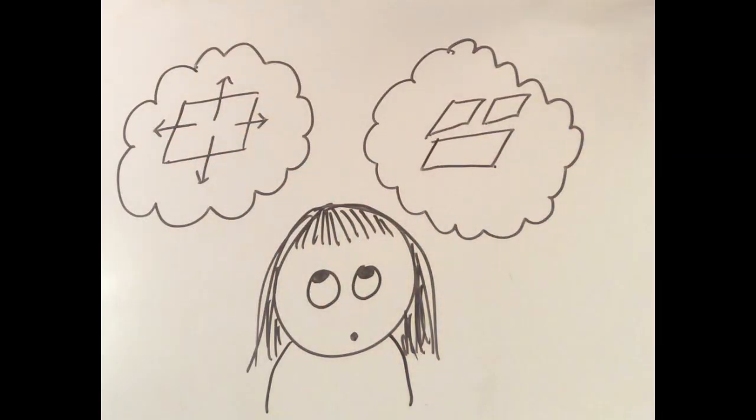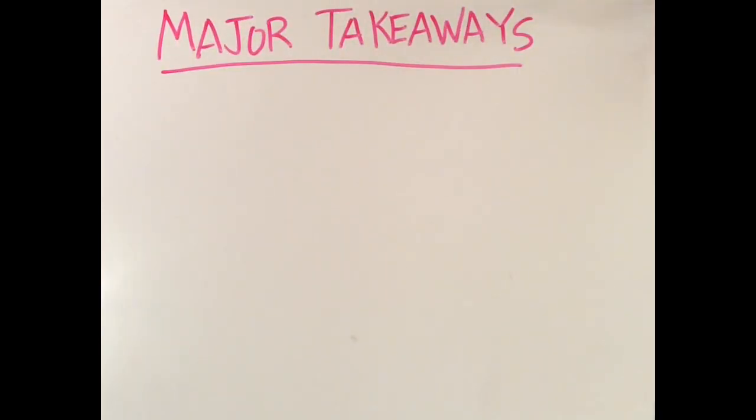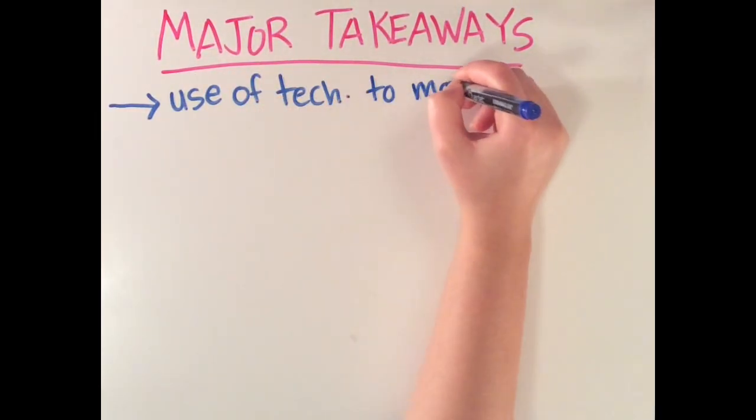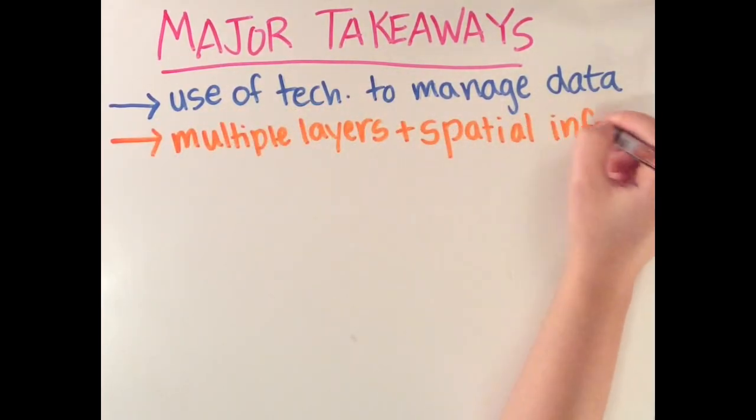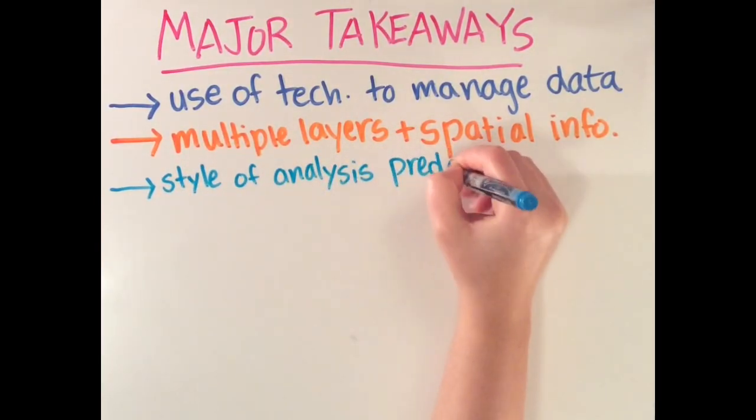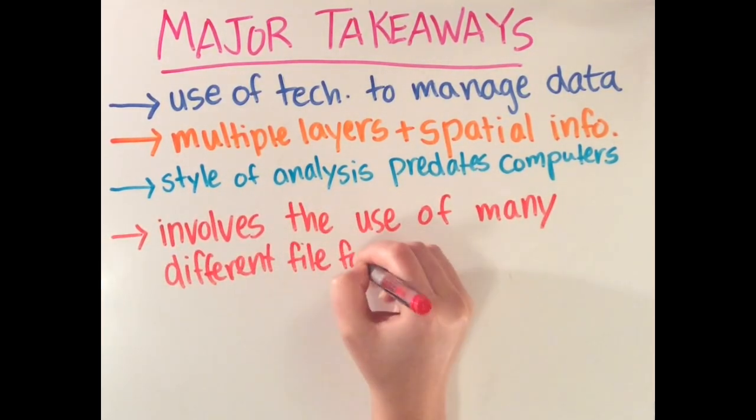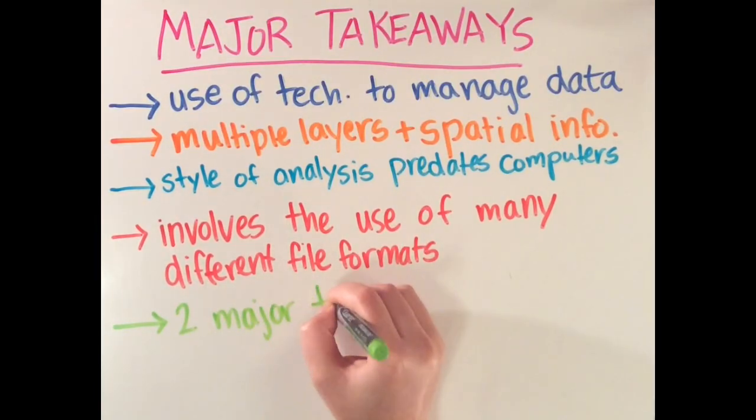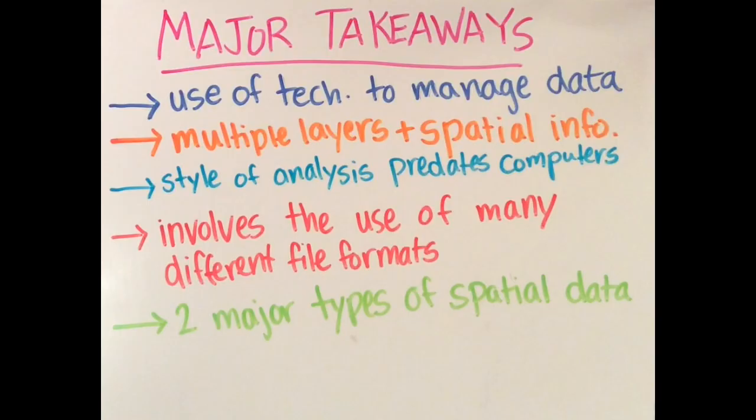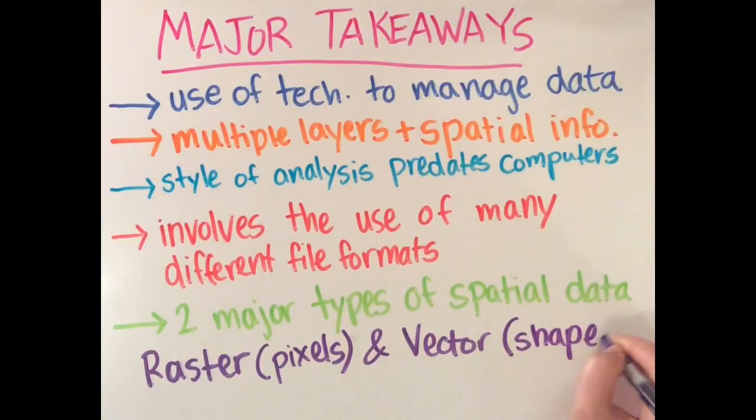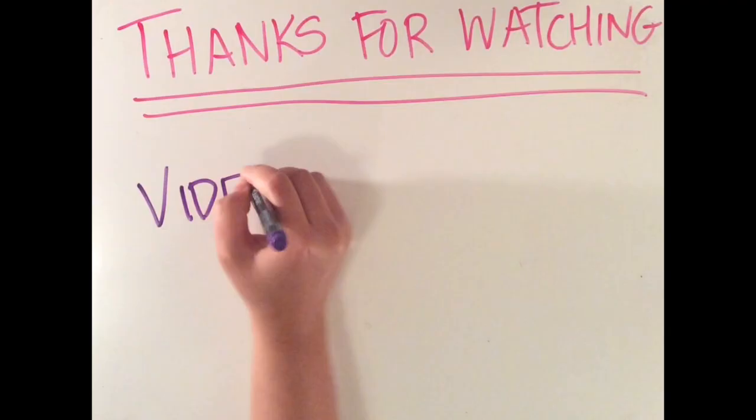In conclusion, GIS is the use of technology to manage data. It combines multiple data layers and spatial information to enhance analysis. Though today GIS technology is largely computer-based, this style of technology predates computers. GIS platforms allow for the use of many different file formats. And finally, there are two main types of spatial data that you will encounter: raster layers, which are made up of pixels, and vector layers, which are made up of separate shapes. Thanks for watching! I hope you liked my video!